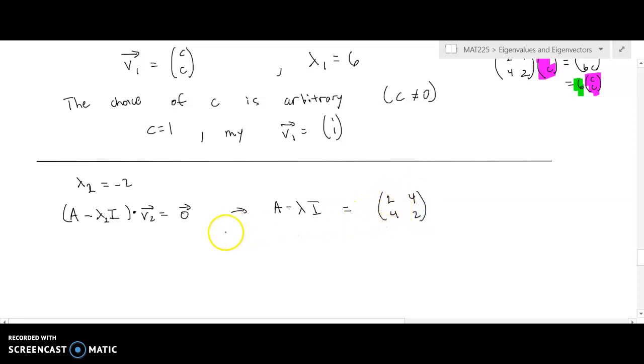Remember, what I'm after here is I want to compute the eigenvector that goes with the eigenvalue of negative 2. I'm going to subtract away, so lambda is negative 2. So that means we're going to be adding 2I.